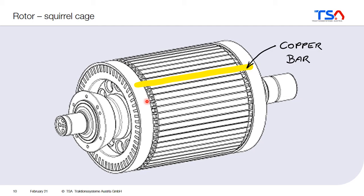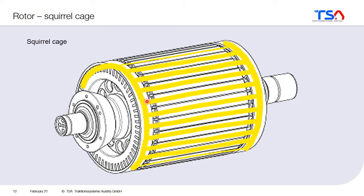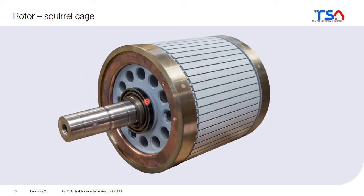Let's have a look now at the rotor and how it is built. Inside the rotor slots of the rotor lamination there are copper bars. At the end, all the copper bars are connected by short circuit rings. So there are the copper bars and the short circuit rings, and together they form the squirrel cage. This is the complete structure of the rotor of an induction machine — it is quite simple, and that is why it is also so successful.